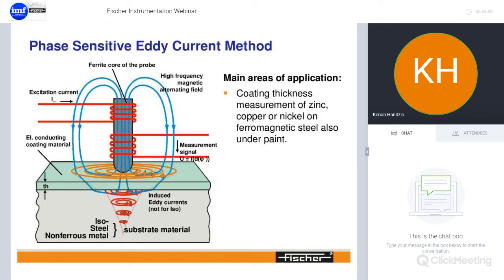There is a third method of detection: the phase-sensitive eddy current. This uses two probes, and the beautiful thing is that the eddy currents generated allow us to measure different metalized coatings — for example zinc, copper, or nickel on ferromagnetic steels, and also under paint. We can actually get a reading of the paint coating thickness on top of the zinc, nickel, or copper, which sits on top of a substrate that is either isolating material or steel.